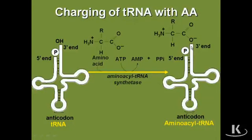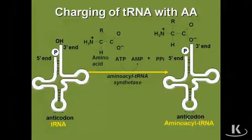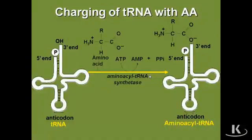So aminoacyl tRNA synthetase is the name of the enzyme that charges the tRNA with the amino acid. What that means in practical terms is that a transfer RNA molecule now has an amino acid attached to it. How does the aminoacyl tRNA synthetase know which transfer RNAs to put the amino acid on? That depends on the anticodon. The anticodon specifies which amino acid gets attached to which transfer RNA. There's not just one aminoacyl tRNA synthetase in the cell — there are several that attach amino acids to the proper transfer RNA.